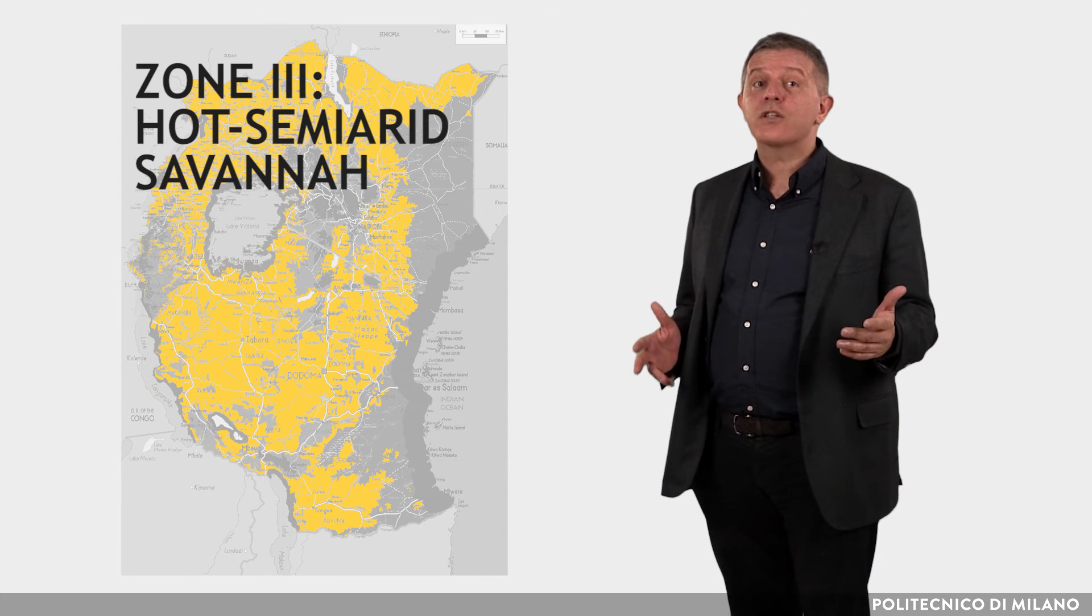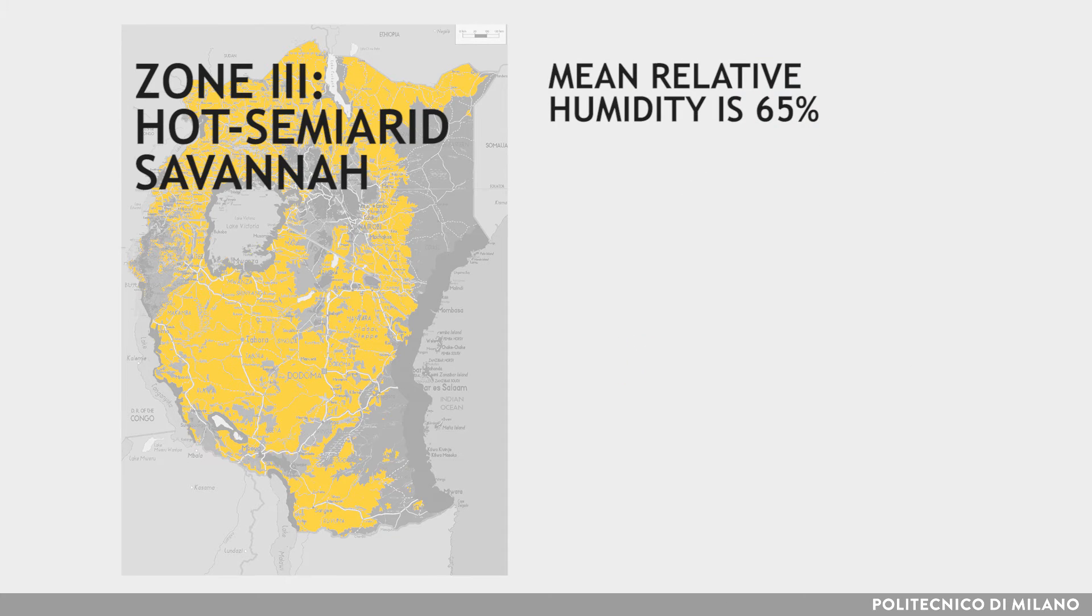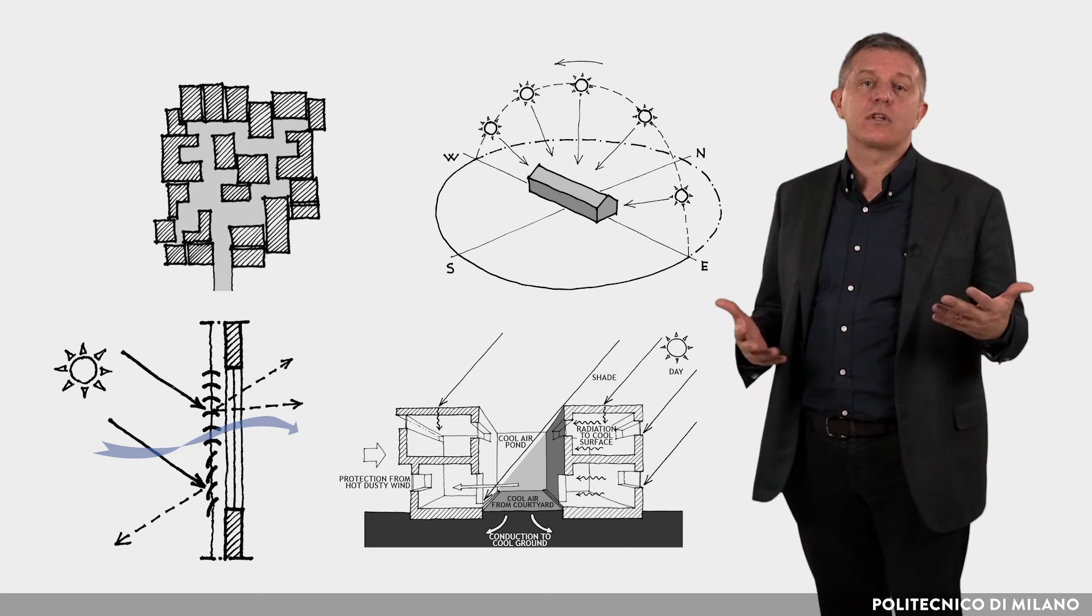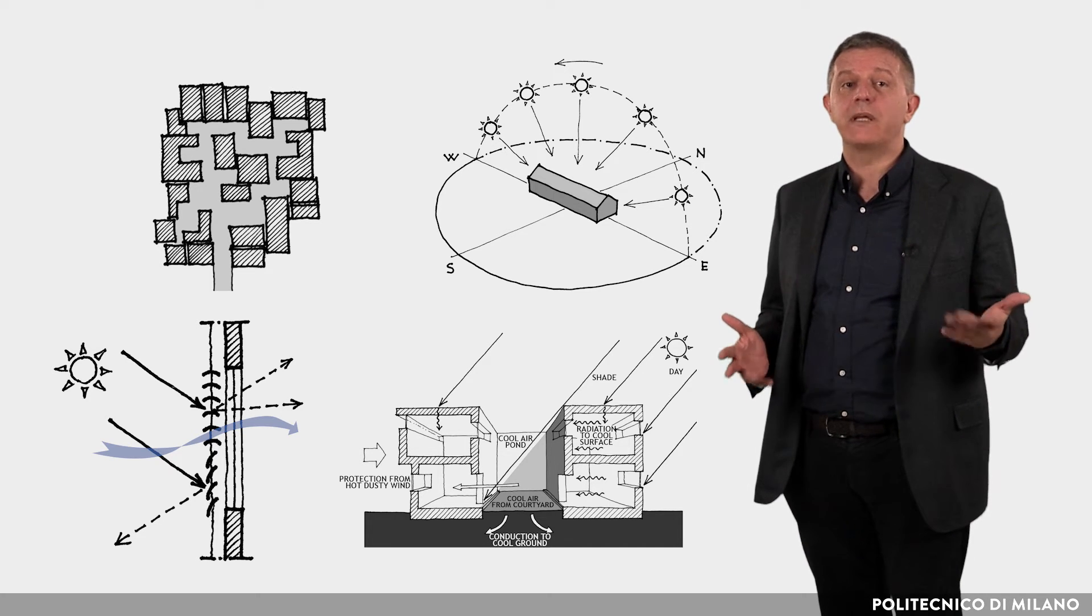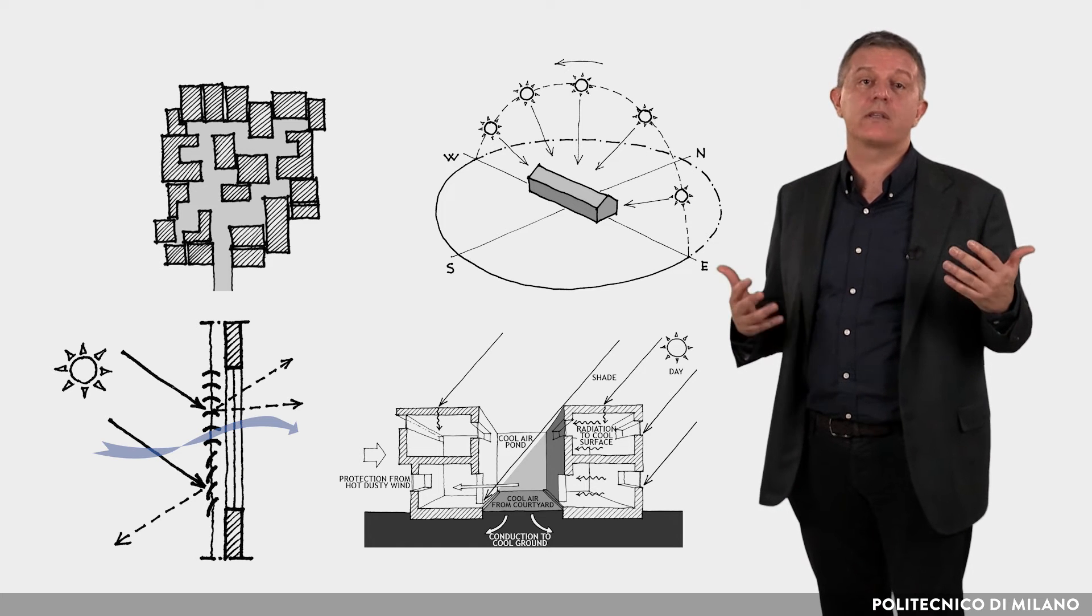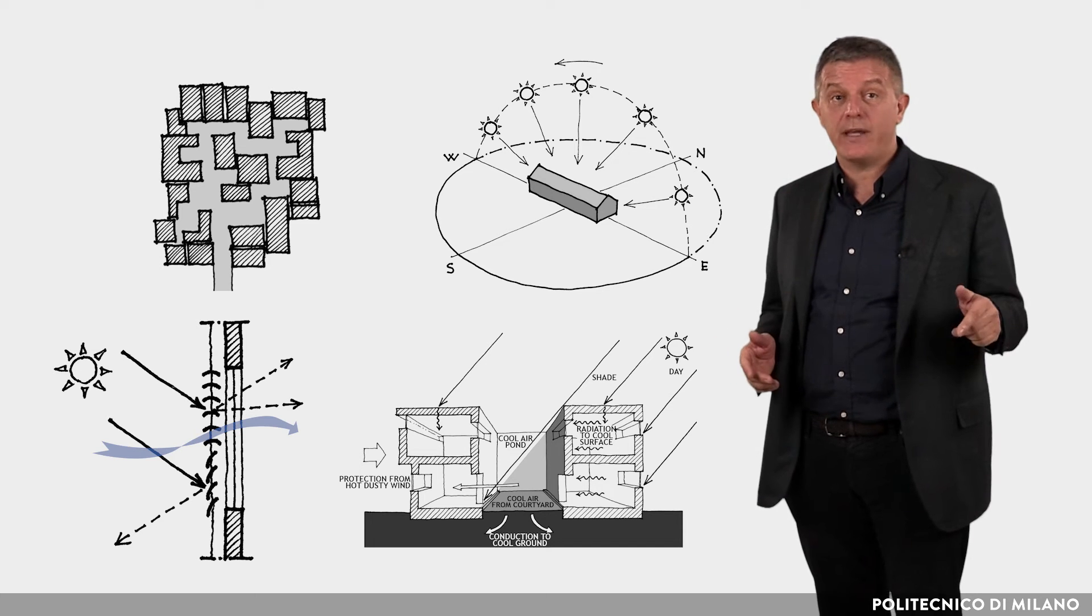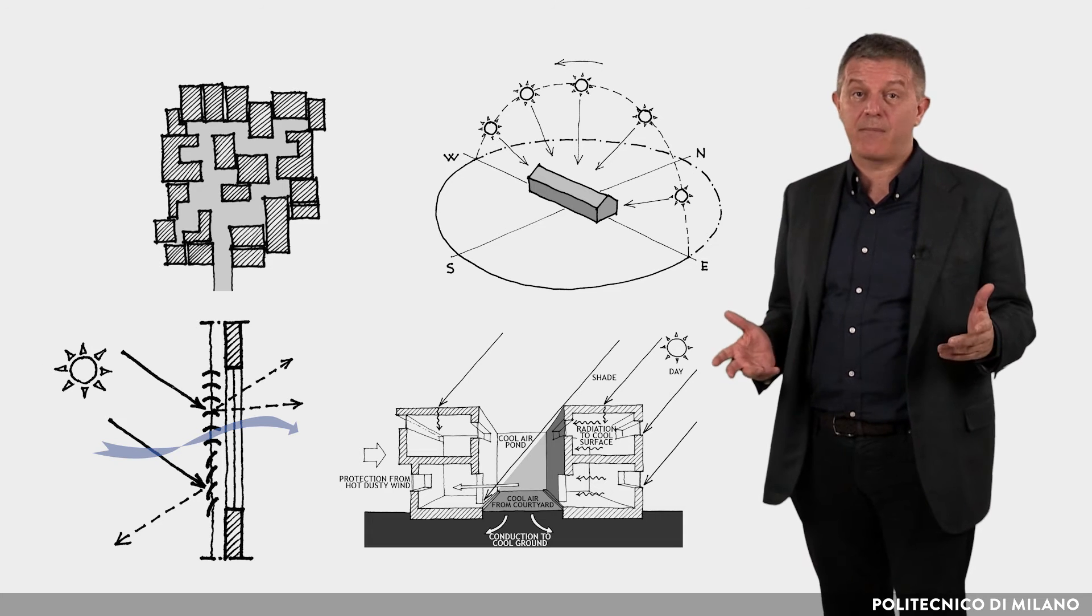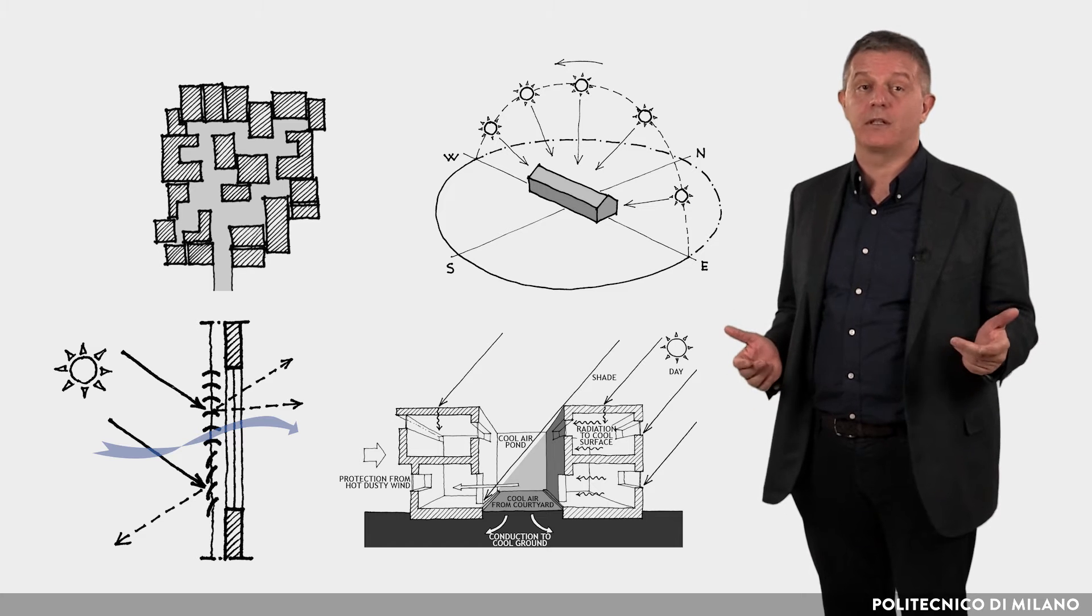Zone 3, hot semi-arid savannah. The difference from the hot-arid zone is represented by relatively higher humidity values, but lower peak temperatures and daily temperature swings. The design strategies for this zone are similar to the hot-arid zone, except the envelope, which should be mid-weight, because of the lower daily temperature swings in hot semi-arid parts, and heavyweight in savannah plains, due to the lower night temperature. In this climate, evaporative cooling is not as effective because of the higher values of relative humidity.